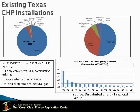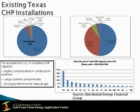Now let's look at what is already in Texas. Texas leads the U.S. in installed CHP capacity. It is highly concentrated in combustion turbines, large systems predominate, and there is a strong preference for natural gas. On the lower right, you find a bar chart comparing Texas as a percentage of total CHP capacity in the U.S. As of today, Texas represents roughly 23% of the total CHP capacity in the U.S. There exists tremendous potential in all three markets in Texas, and there have been several studies with regard to that.